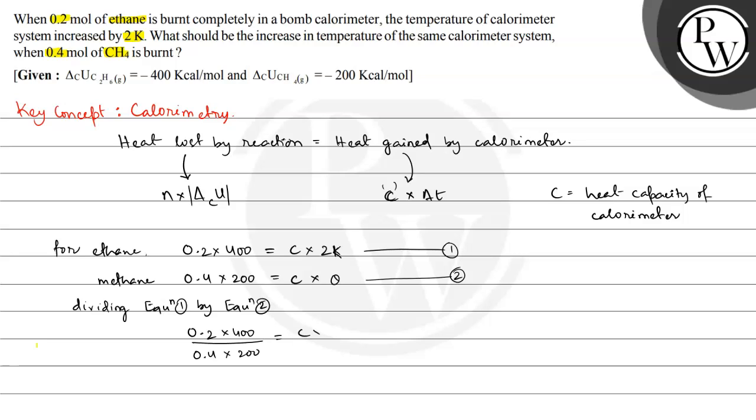...is equal to C multiplied by 2K divided by C multiplied by theta. So C and C cancel, and 0.2 and 0.4 we can cancel it out by 2, and 400 and 200 we can also cancel it out by 2. So net value is equal to 1.